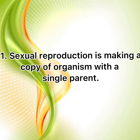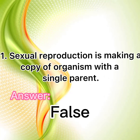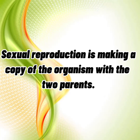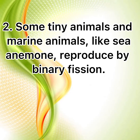Let's check. 1. Sexual reproduction is making a copy of the organism with a single parent — Answer: False. Sexual reproduction is making a copy of the organism with two parents. 2. Some tiny animals and marine animals like sea anemone reproduce by binary fission — Answer: True.